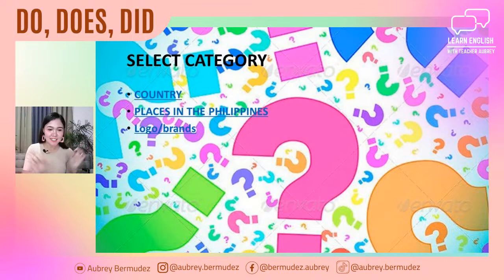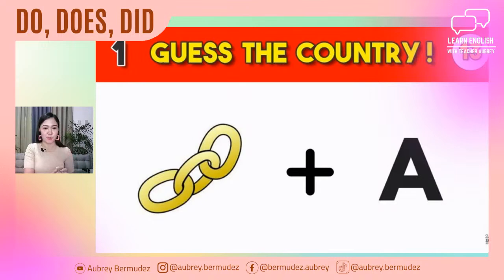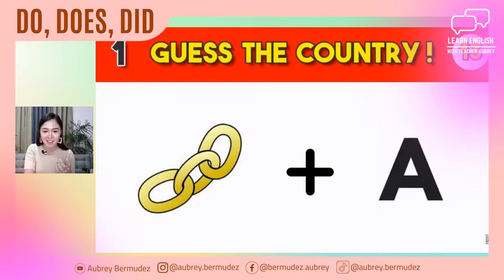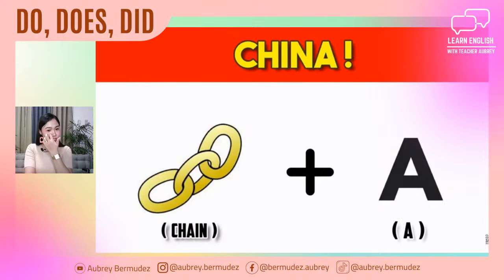Let's get started. The first category is countries. The first picture — what country is this? I already saw a correct answer from Jira. That is China. China from Nicole, from Danielle. The correct answer is China.